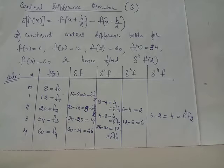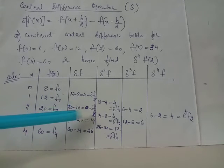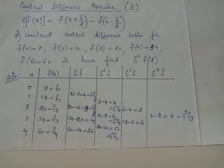Next value will be 14 minus 8, written midway between these two values, which is 6 with notation delta square f2. Next value will be 26 minus 14 which is 12 with notation delta square f3.